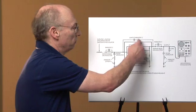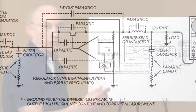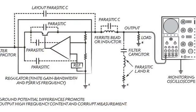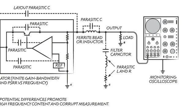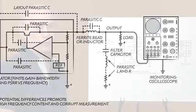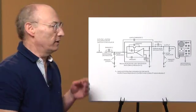The regulator has parasitic internal paths basically from everywhere to everywhere, and the output filter components suffer the same problems that the input filter components have. So the monitoring oscilloscope looking across the load sees stuff that you don't want to be there.